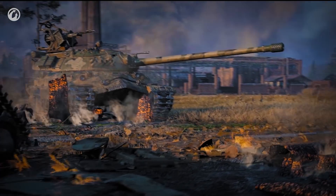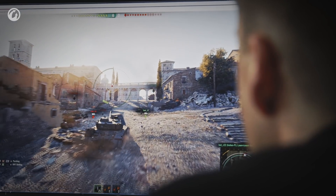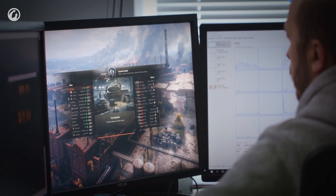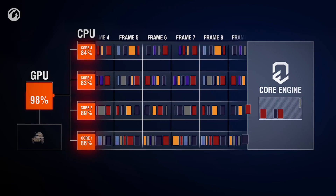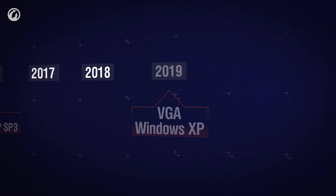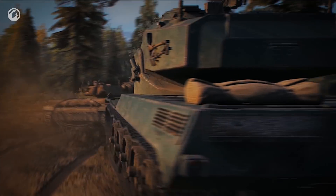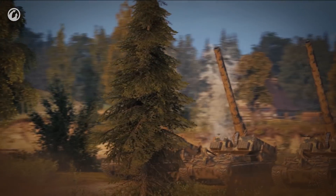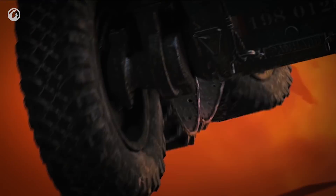After Update 1.0 was released in March 2018 with a full revamp of the graphics, work on the new Core Engine continued. Since then, our developers have implemented concurrent rendering, and we've ceased to support Windows XP and DirectX 9. As a result, our developers can move forward and integrate new technologies into the Core Engine. One of these technologies is ray tracing, which can bring shadows to the next level.